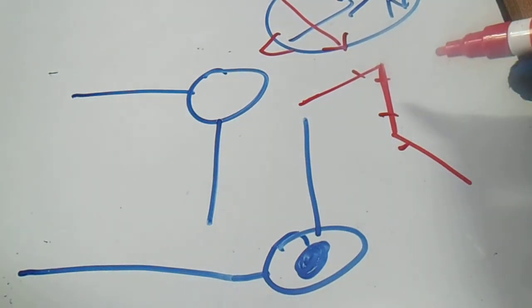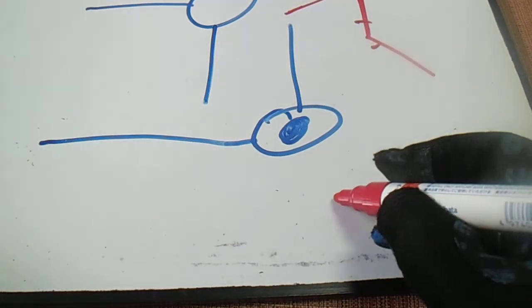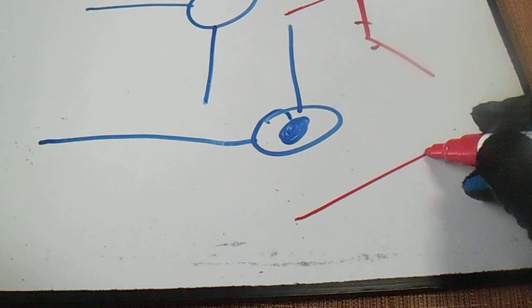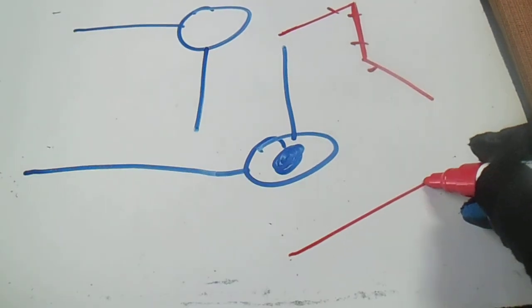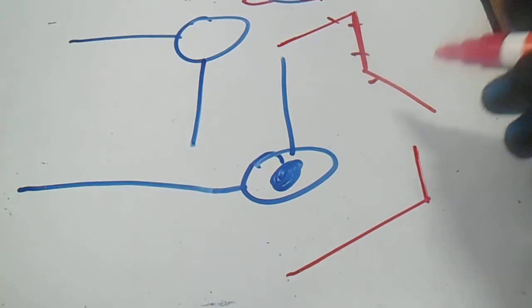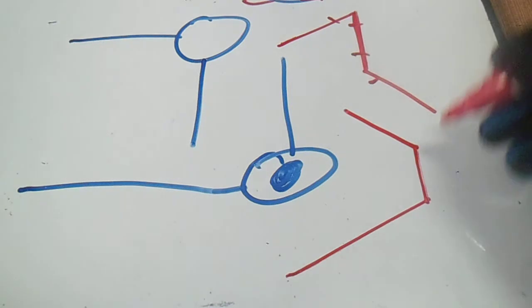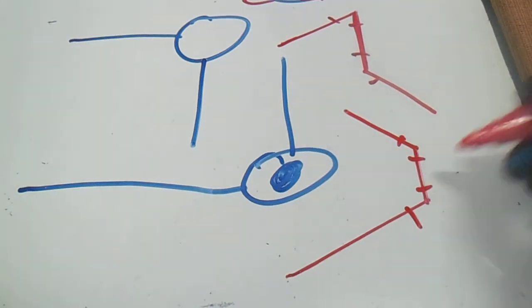And then going up and then going to there. Okay, so this is an example of to make an isometric drawing and for the orthographic drawing.